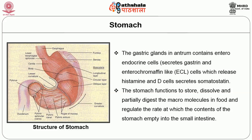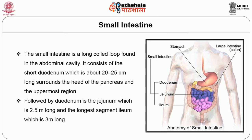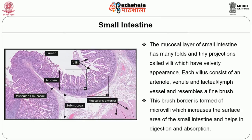The small intestine is a long coiled loop found in the abdominal cavity. It consists of a short duodenum, which is about 20 to 25 cm long and surrounds the head of the pancreas in the uppermost region, followed by the jejunum which is 2.5 m long, and the longest segment, the ileum, which is 3 m long. The mucosal layer of the small intestine has many folds and tiny projections called villi, giving a velvety appearance. Each villus consists of an arteriole, venule, and lacteal or lymphocyte, and resembles a fine brush. This brush border is formed of microvilli which increase the surface area of the small intestine and aid in digestion and absorption.